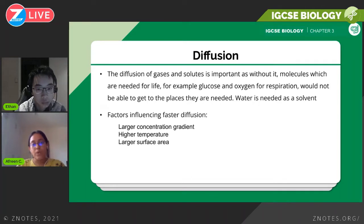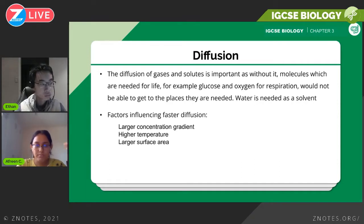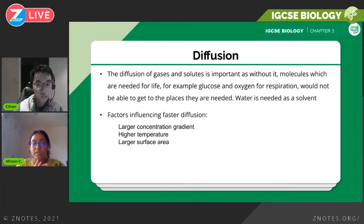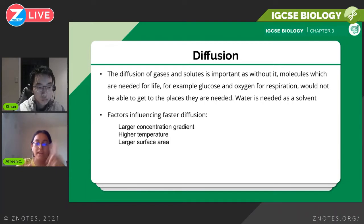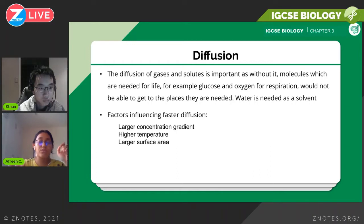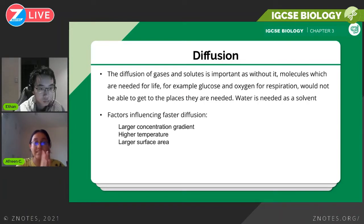Why do organisms need diffusion? Diffusion of gases and solutes is important because substances like carbon dioxide and oxygen diffuse in our lungs — that's how we get a fresh supply of oxygen and remove carbon dioxide. Also in the kidneys, in the nephrons, toxic and excess substances are filtered out of the blood through diffusion.